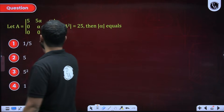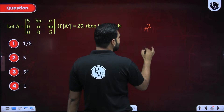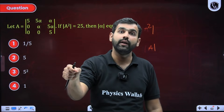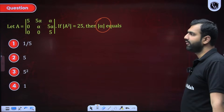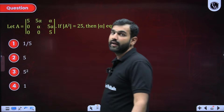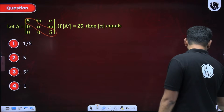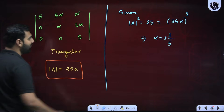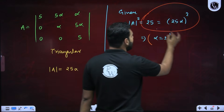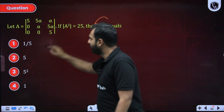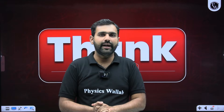Look at the next question: det(A²) = 25. We know det(A²) = (det A)². Since A is a triangular matrix, its determinant is the product of principal diagonal elements: 5 · alpha · 5 = 25·alpha. So (25·alpha)² = 25. Solving: alpha = ±1/5, and |alpha| = 1/5. Option A needs to be marked. Did you understand how interestingly we solved all these questions to revise this entire chapter? Let's meet in the next video.